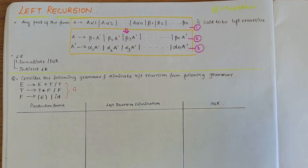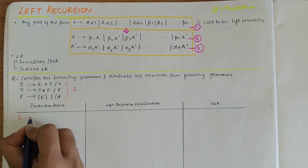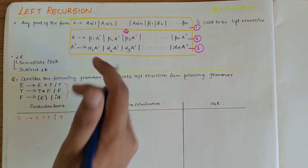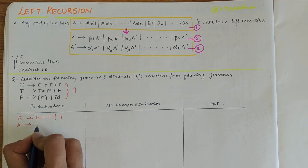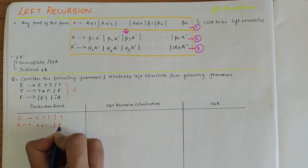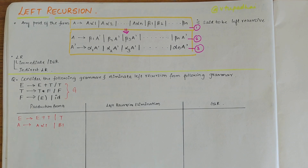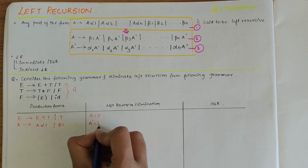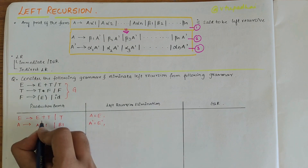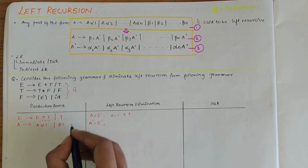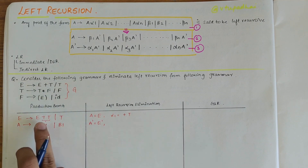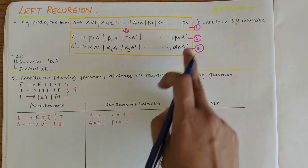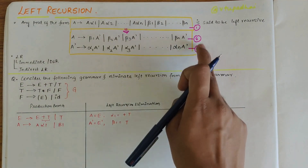The first production is E derives E-plus-T and T. This is of the form A derives A-alpha-1, beta-1. Here A is E, so A-bar would be E-bar or E-dash. Alpha-1 is plus-T, and on the other side we have no alpha, so T is taken as beta-1.